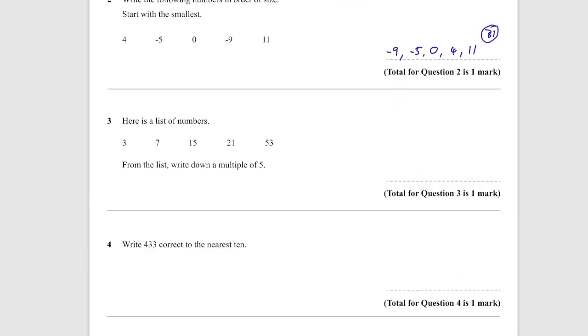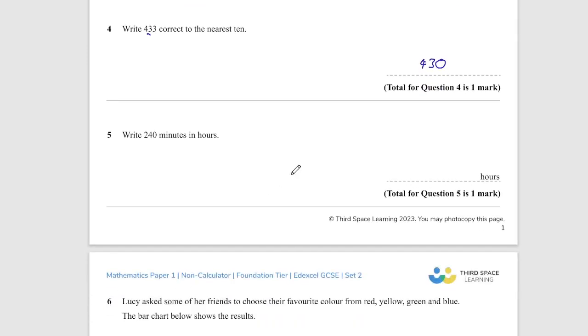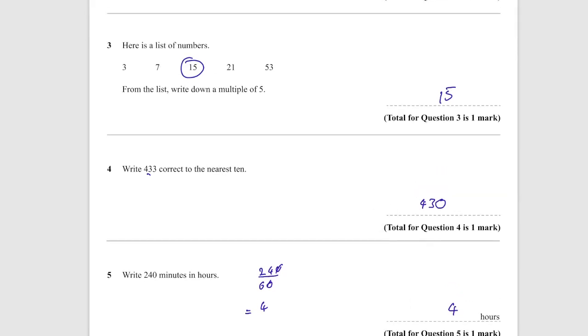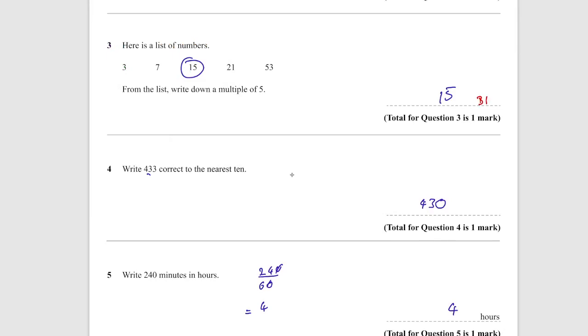Here's a list of numbers, from the list write down a multiple of 5. That's anything ending in a 5 or a 0, so we've only got 1, so we're looking at 15 for that. Question 4, write 433 correct to the nearest 10. To the nearest 10, that's either going to be 430 or 440. That number is closer to 430. Write 2 hours and 40 minutes in hours. We're looking at 240 divided by 60, which is going to be the same as 24 divided by 6. So that goes in exactly 4 times, so 4 hours. Marks are B1, B1, and for this one it is an A1.